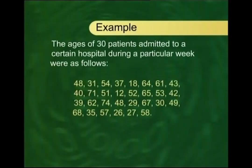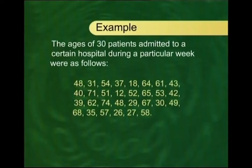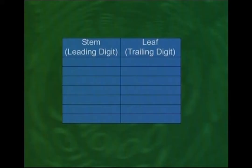How will we construct a stem and leaf display for an entire data set and not just for one number? Consider the following example. Suppose we have the ages of 30 patients admitted to a certain hospital during a certain week. To represent this data in a stem and leaf display, we take the first digit of every number as the stem and the second digit as the leaf.